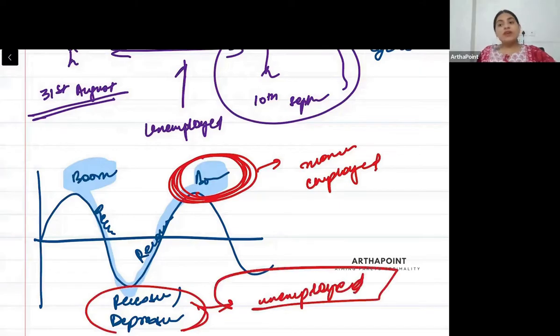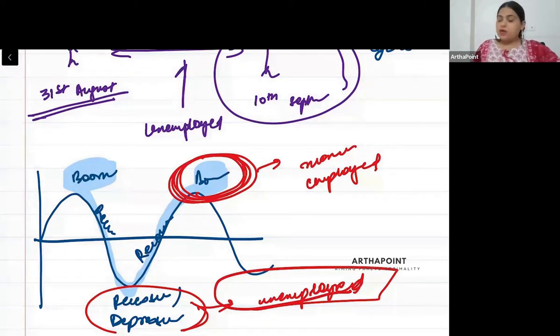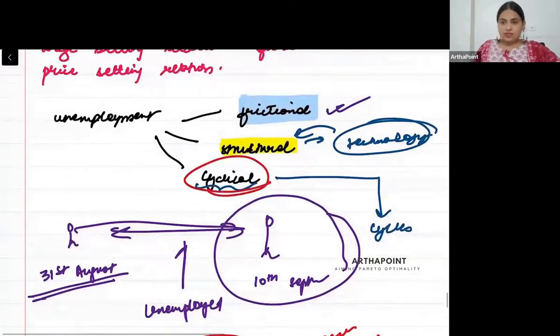Like right after COVID, the economy was in recession and people were unemployed, right? So the unemployment which is due to the cycles is called cyclical unemployment.